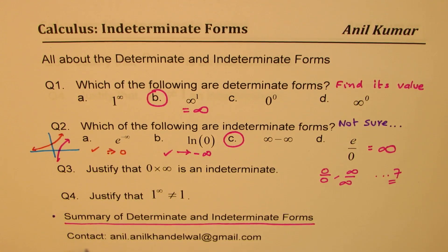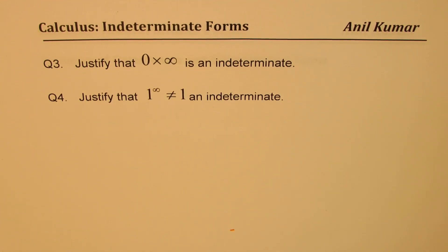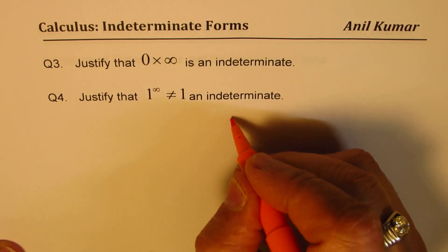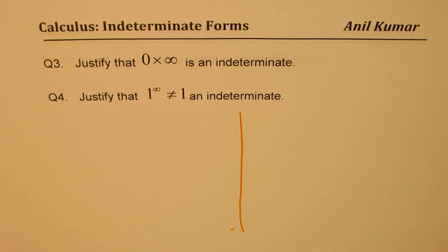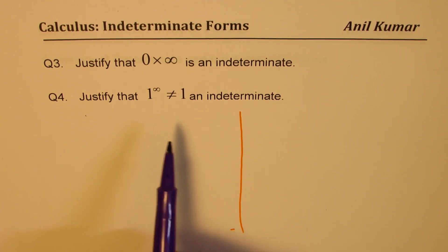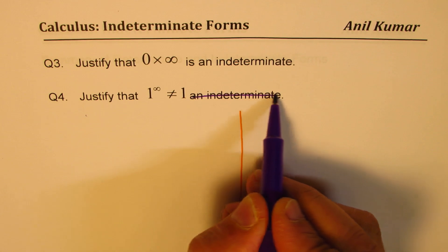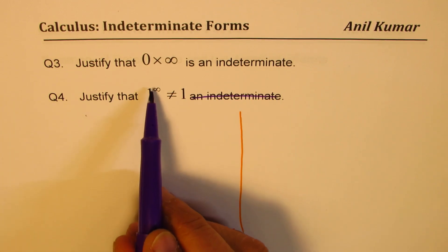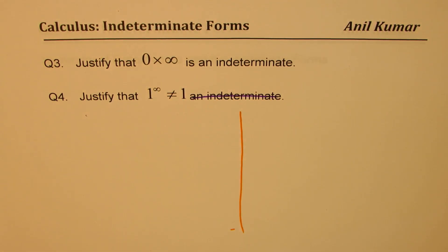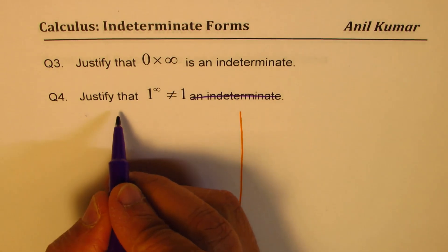In case you have any doubts or want to understand something, you can always send me an email at the address shown here. So let's take up question number three. Here are two very important questions: justify that 0 times infinity is an indeterminate, and question number four, justify that 1 to the power of infinity is not equal to 1.